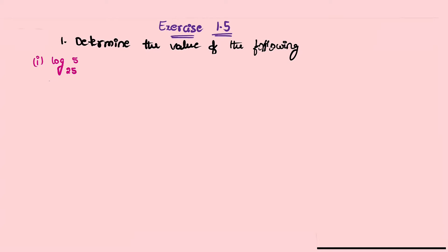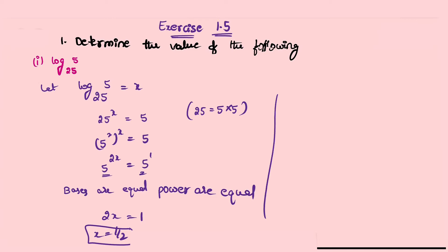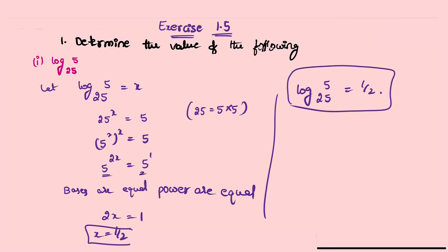Exercise 1.5, first problem: log base 25 of 5. Let log base 25 of 5 equal to x. Convert to exponential form: 25^x = 5. Now 25 = 5², so (5²)^x = 5, which gives 5^(2x) = 5. Bases are equal so powers are equal: 2x = 1, x = 1/2. Therefore log base 25 of 5 equals 1/2.